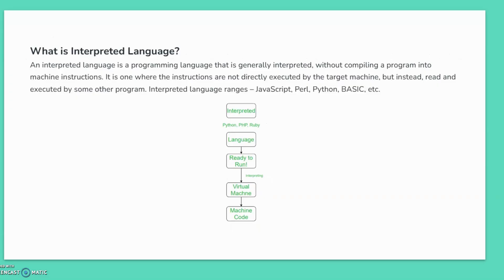Now talking about an interpreted language: an interpreted language, just like Python, is a programming language that is generally interpreted without compiling the program into machine instructions. We are not converting them into machine instructions. It is one where instructions are not directly executed by the target machine but are instead read and executed by some other program — it is interpreted. Examples are Python, PHP, and Ruby. The interpreted languages are interpreted and, when ready to run, they get interpreted in the virtual machine and then converted to machine code.